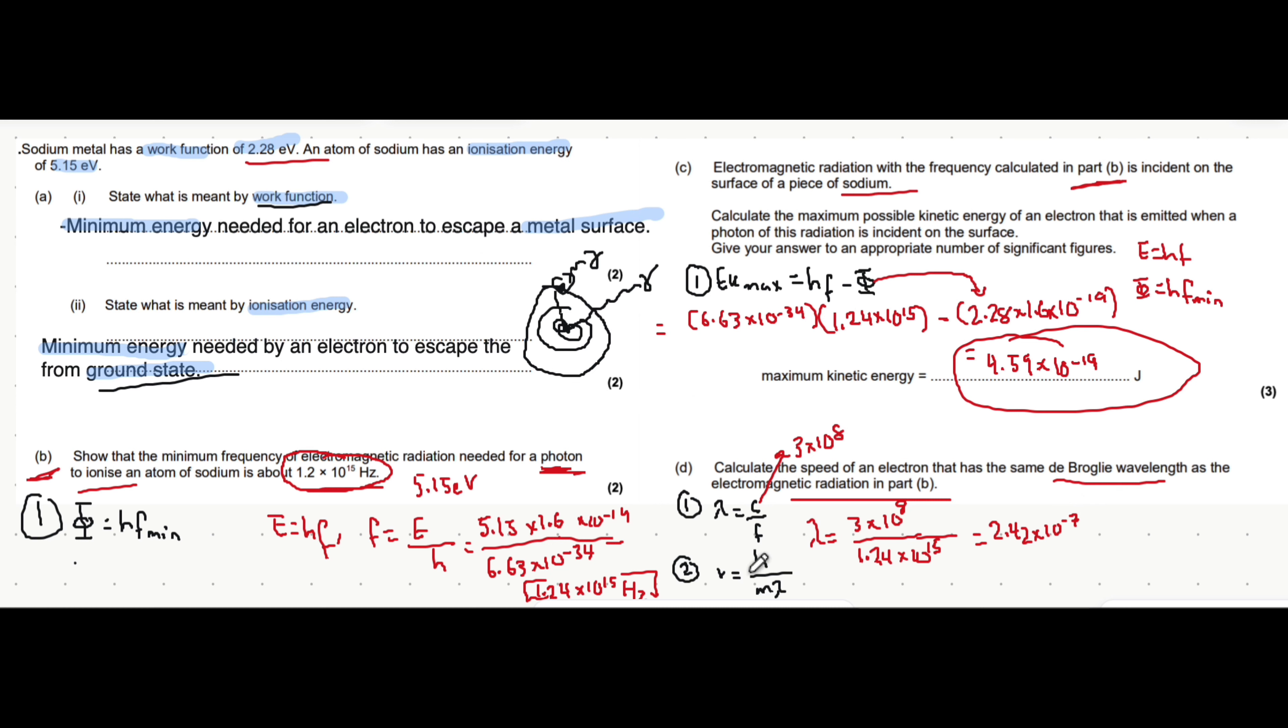We can use the de Broglie wavelength equation, which I've already rearranged to make velocity the subject. Velocity equals h, which is 6.63 times 10 to the minus 34, divided by the mass of an electron, 9.11 times 10 to the minus 31, multiplied by wavelength. Putting everything in gives 3010 meters per second.